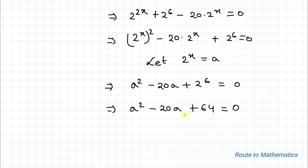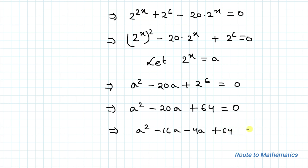We now have a quadratic equation. Let's find the solution for a by factorizing. We have a squared minus 20a plus 64 equals 0. The factors of 64 allow us to split the middle term as minus 16a minus 4a, giving: a squared minus 16a minus 4a plus 64 equals 0.